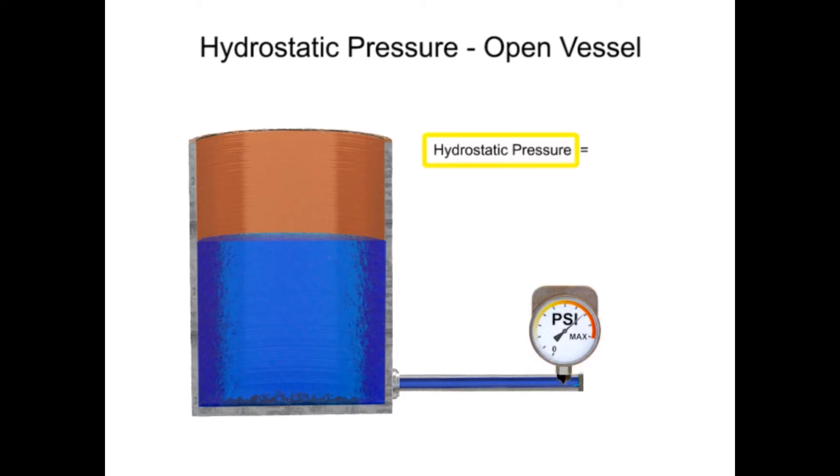To calculate hydrostatic pressure, the density of the material is multiplied by the height of the column. The level of fluid in a column can be determined by dividing the pressure value by the density of the material.